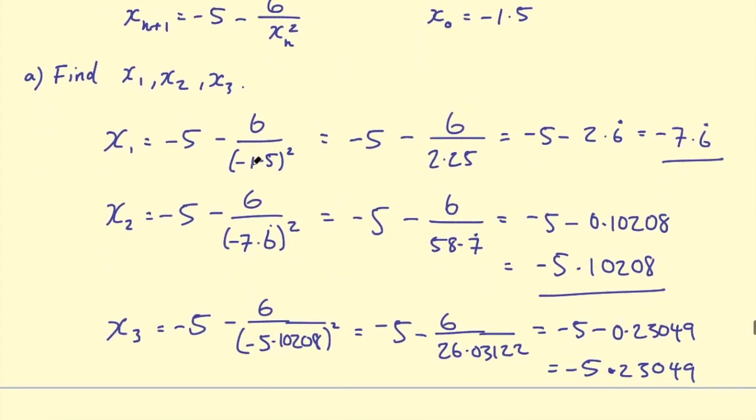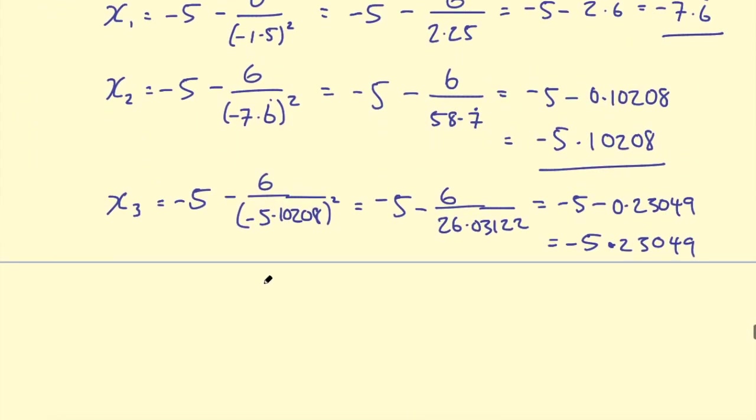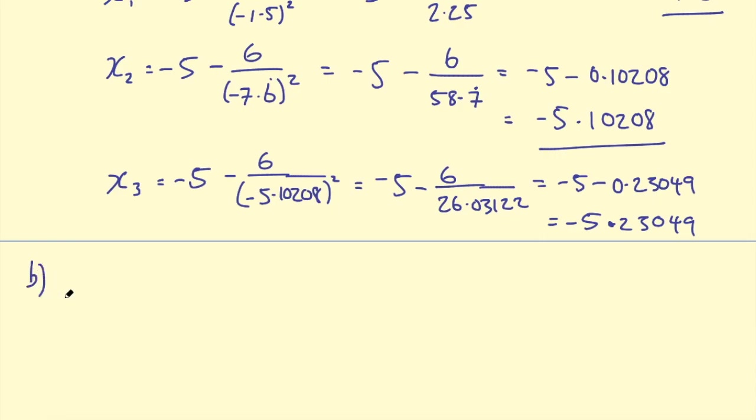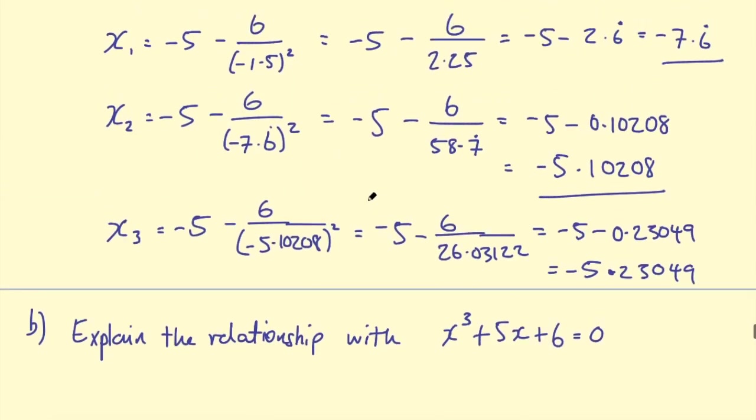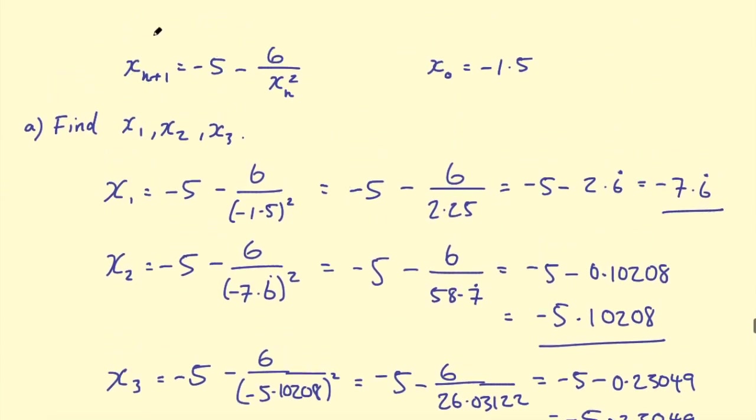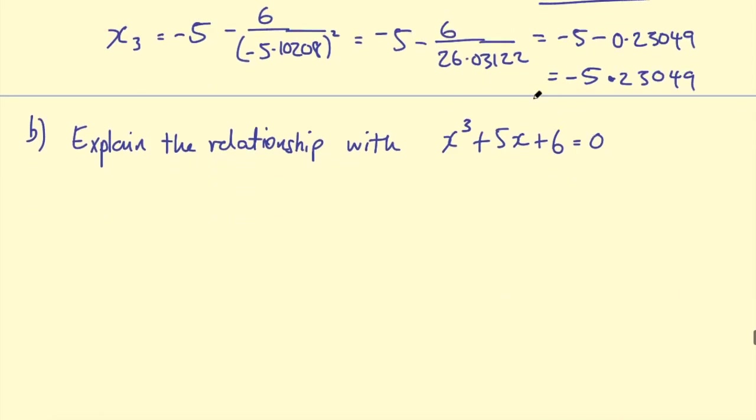Once you've got those three terms, the second part of the question can sometimes say, 'Explain the relationship with' - and then it might give you a cubic. In this case, it's x³ + 5x² + 6 = 0. So we need to explain the relationship between this iterative formula and this cubic. What this is saying is we need to rearrange this formula to get this.